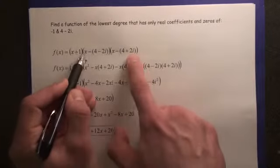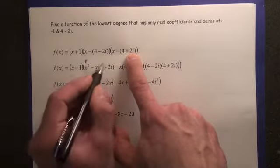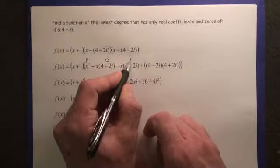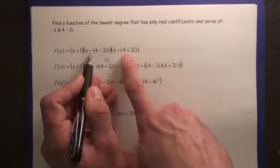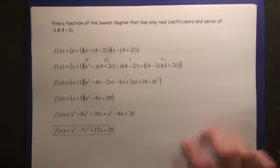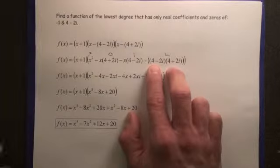Okay, your outside term is x times 4 plus 2i. Your inside term is x times 4 minus 2i, and your last term is negative 4 minus 2i times negative 4 plus 2i last. So we're going to end up doing FOIL on that last step.